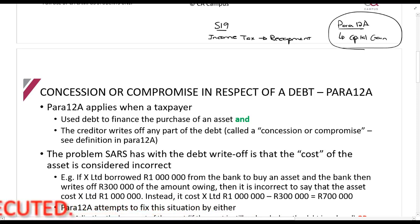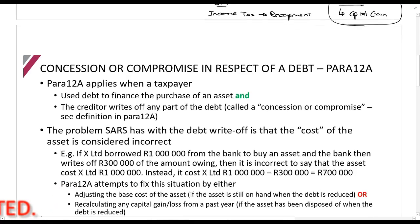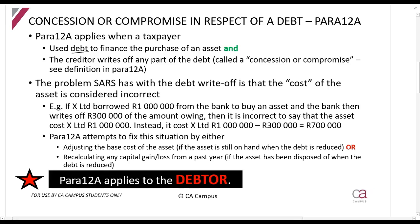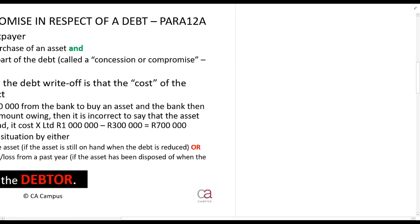This section applies where a person used debt to finance the purchase of an asset - so I borrow money and I buy an asset - and then the creditor writes off any part of that debt.